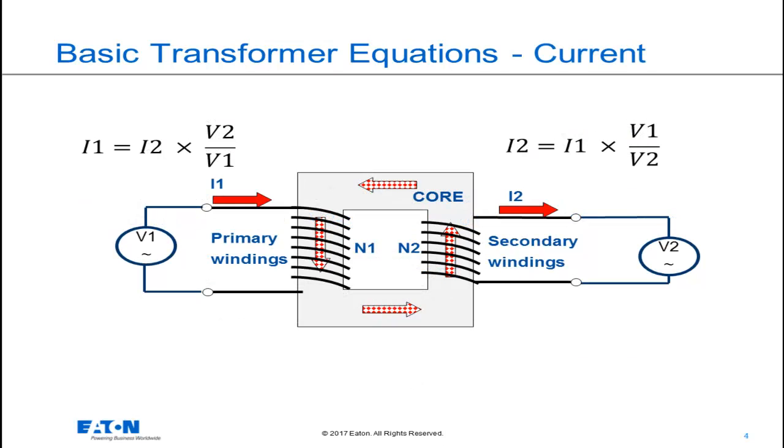The turns ratio of a transformer impacts the currents we see on the secondary and primary in such a manner that currents on the primary or secondary can be reflected to the other side of the transformer based on the turns ratio. The relationship is shown in these two basic equations.